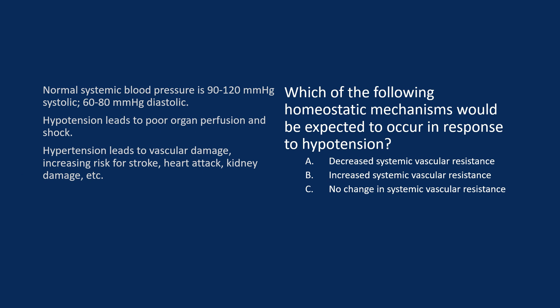Normal systemic blood pressure is 90–120 mmHg systolic and 60–80 mmHg diastolic. Deviating from this range has negative consequences: hypotension leads to poor organ perfusion and shock, while hypertension leads to vascular damage, increasing risk for stroke, heart attack, kidney disease, and many other adverse effects. Consider: which homeostatic mechanism would be expected in response to hypotension? The only variable given is systemic vascular resistance — would it increase, decrease, or stay the same?